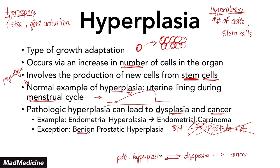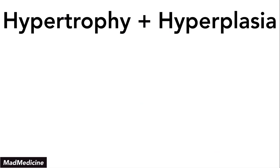The truth is, a lot of times in our body, both of these processes are happening at the same time, especially when exposed to a stressful environment. Our body has the ability to adapt in multiple ways, and if every cell could only adapt in one of the two ways, we would never survive. That's why we have these adaptive mechanisms — to increase our chances of survival when placed under stressful situations. Usually both of these things happen together.